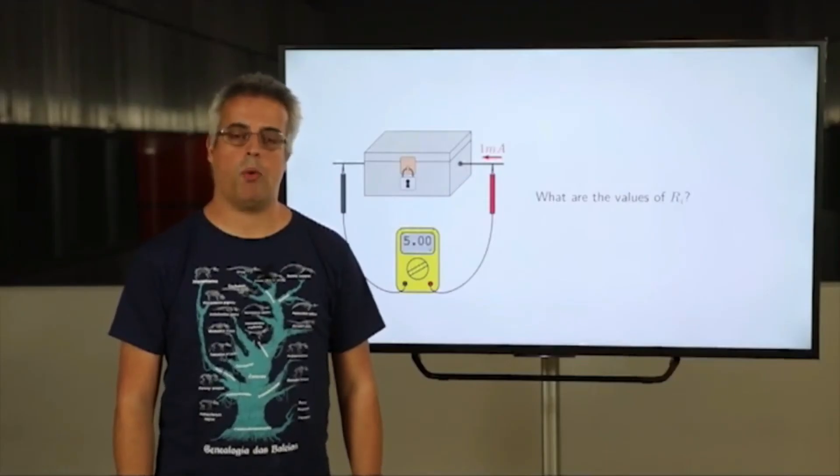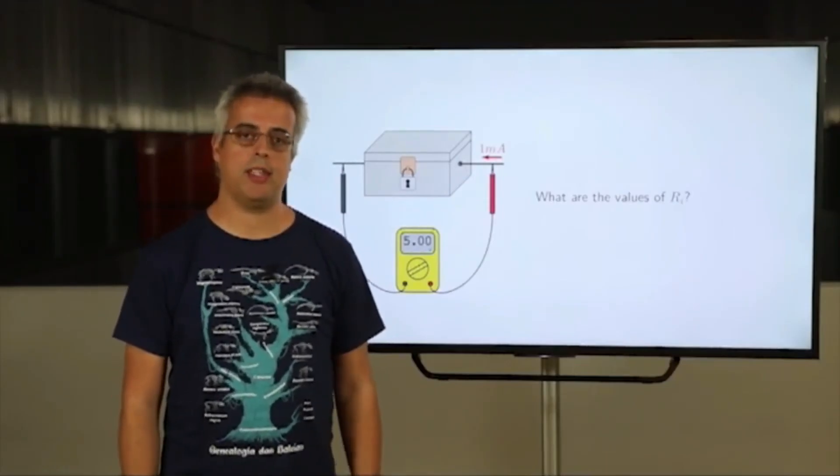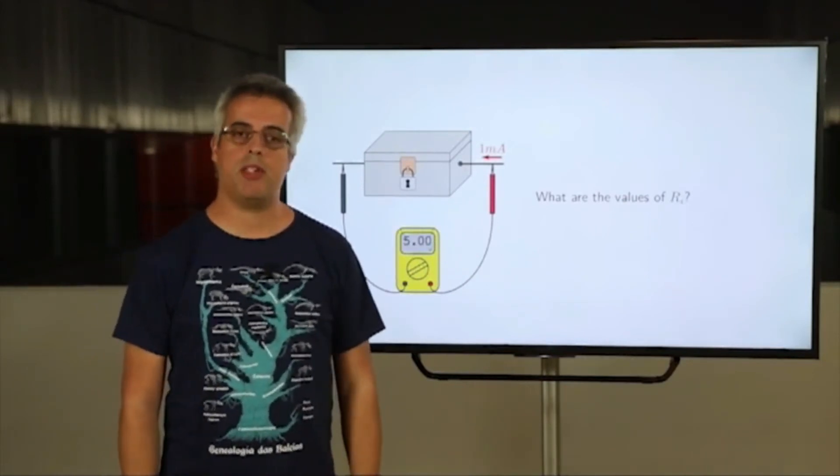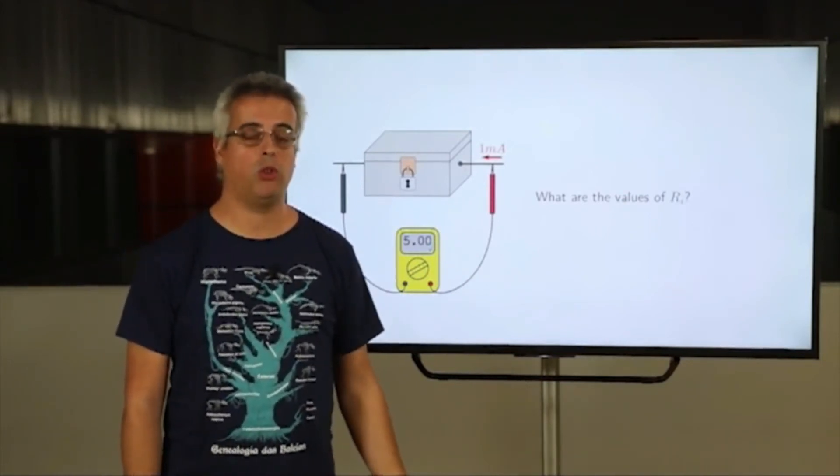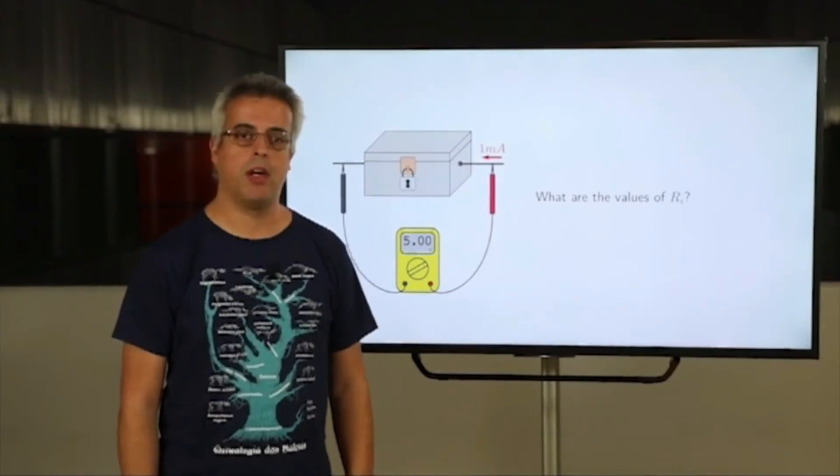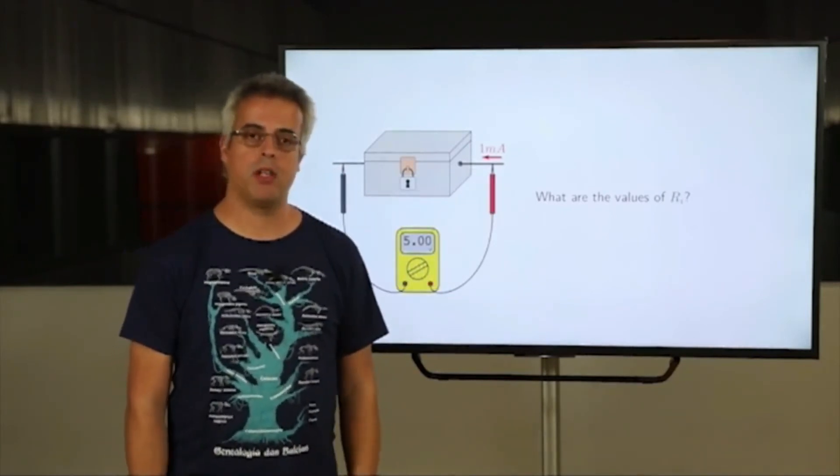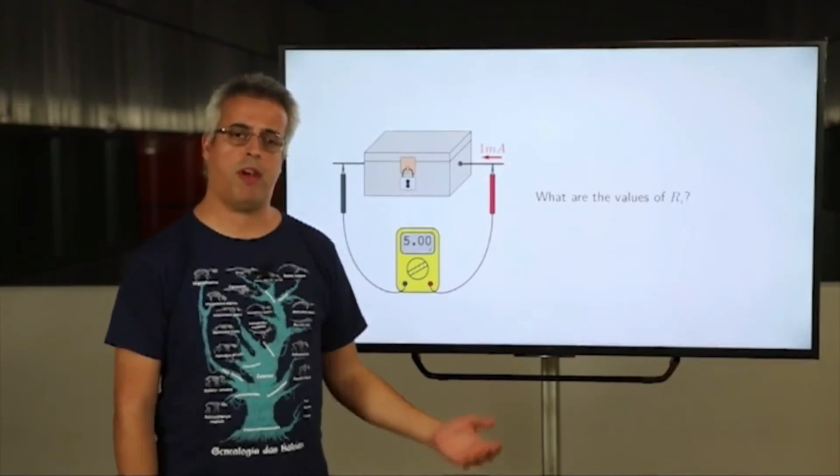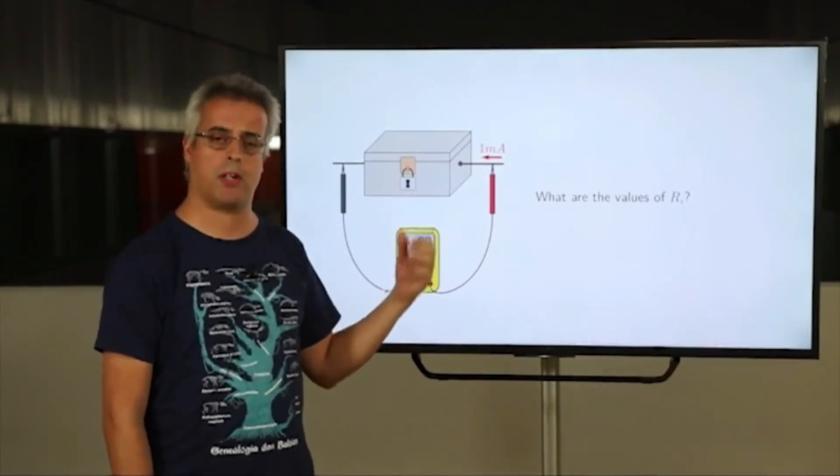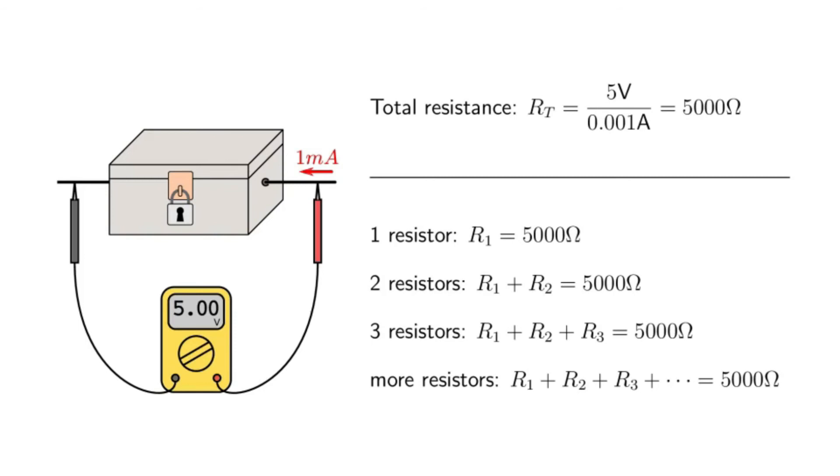In this last example we have many resistors connected in series inside a box. We don't know how many resistors are connected, could be 1, 2, 3 or any number. We only have the two terminals available for measuring. So, what can we say about the values of the resistors inside the box? This is an extreme case, we don't even know the number of resistors that are inside the box. Because of the lack of information, all we can say is that the total resistance inside the box is 5 kilo Ohms.